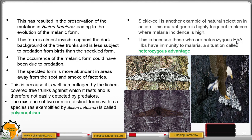The normal type of hemoglobin produces red blood cells which are biconcave in shape, and these are efficient in oxygen loading and transportation. The other, defective type produces red blood cells that are sickle-shaped — in other words, C-shaped or crescent-shaped — and therefore they are not efficient in the transportation of oxygen.